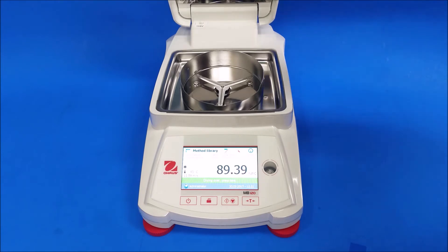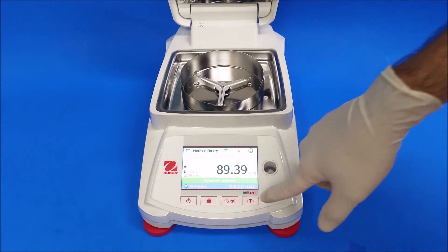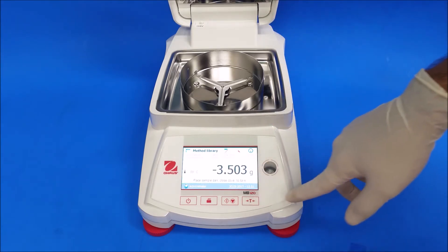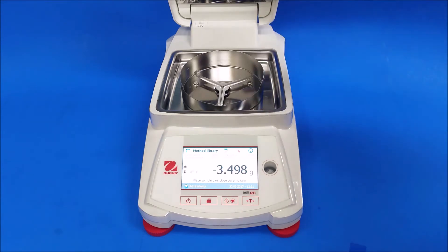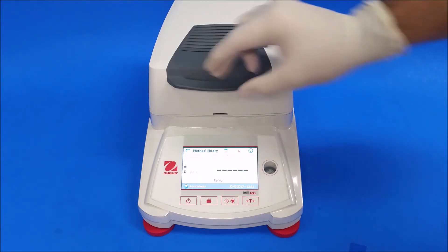And if you're going to run another test, this is when you press the tare button here. Once you put a new aluminum dish and close it, it's going to tare. It tares by itself.